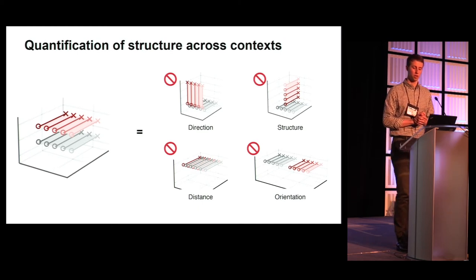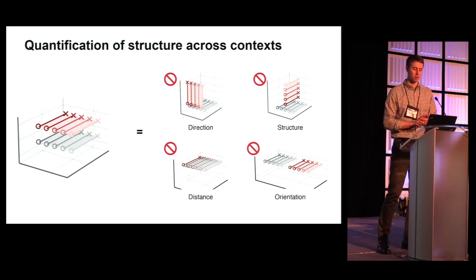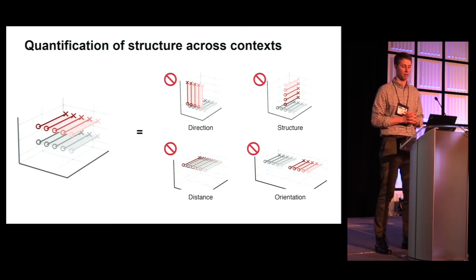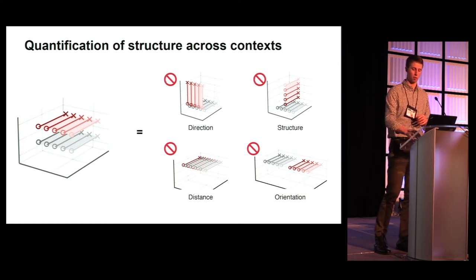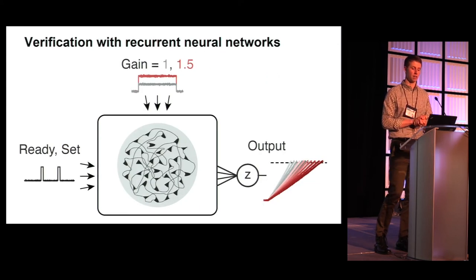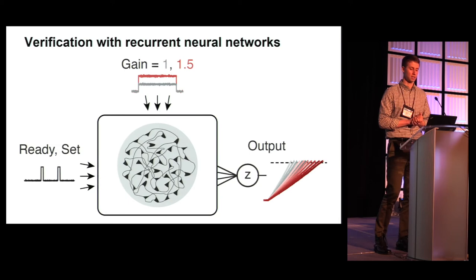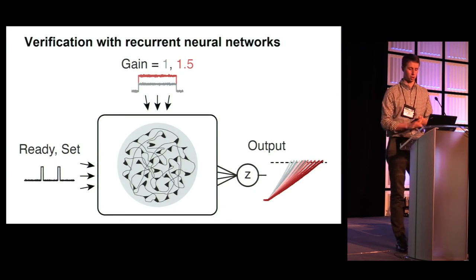So, we have confirmed that the neural trajectories in the RSG task possess a structure consistent with our intuitions of the behavior of a dynamical system controlled by inputs and initial conditions. We then went on to verify that an artificial system performing the task, a system whose behavior we could fully control and observe, could be described using the same geometrical structure.